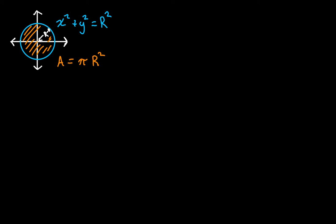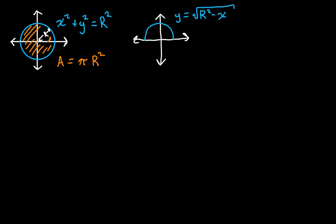So what if we change it? I'm going to make a different graph — just a semicircle. And the equation here is actually going to be a function. It's going to be y, as a function of x, is the square root of r squared minus x squared. And that's actually a function we can deal with.